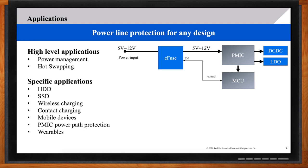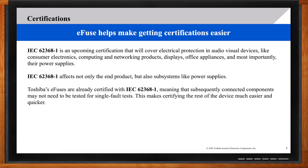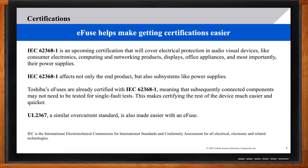Earlier you mentioned certifications. Can you elaborate a little bit more on what certifications you guys support and why they are important? We've designed the e-fuse to fill this IEC 62368-1 requirement. If you haven't heard of this before, it's a fusing requirement that covers electrical protection and audio-visual devices like consumer electronics, computing, networking products, displays, office appliances, most importantly, their power supplies. This new requirement is going to be put into place December in 2020, and it's important to have hazard avoidance levels. The e-fuse allows the user to gain this certification much easier because it actually does act as a means of hazard avoidance.